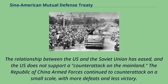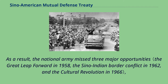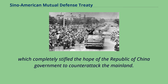As the relationship between the U.S. and the Soviet Union eased, the U.S. did not support a counterattack on the mainland. The Republic of China Armed Forces continued to counterattack on a small scale, with more defeats than victories. As a result, the National Army missed three major opportunities, which completely stifled the hope of the Republic of China government to counterattack the mainland.